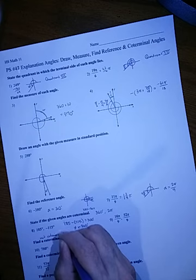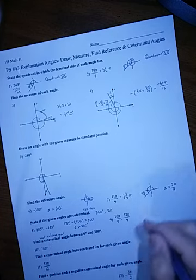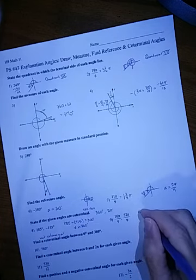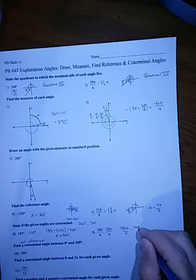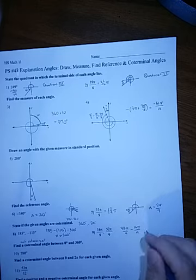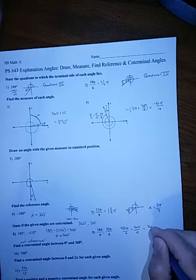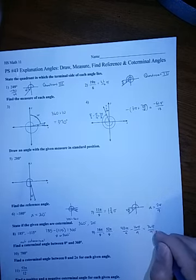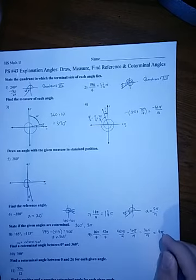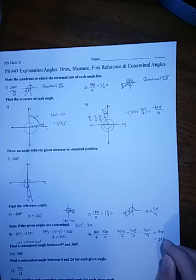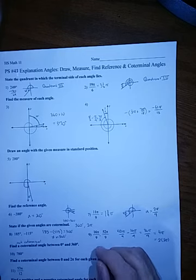If we do the same thing now for the radians, if we take the larger one, which is the 52 pi over 9, and subtract the smaller one, which is 16 pi over 9, we end up with 36 pi over 9. 36 divided by 9 is 4, so that would be 4 pi. This is a multiple of 2 pi. That's 2 times 2 pi. And since it's a multiple of 2 pi in between them, that means that they are coterminal.